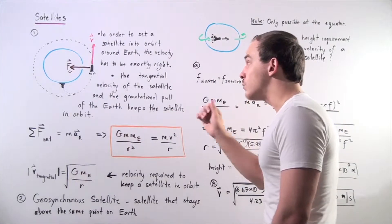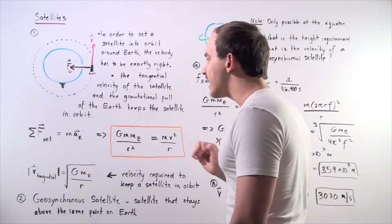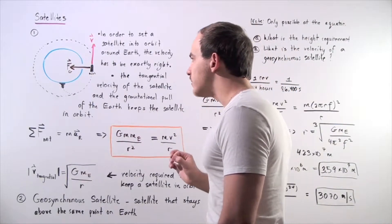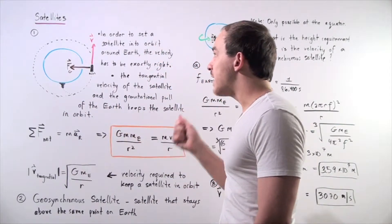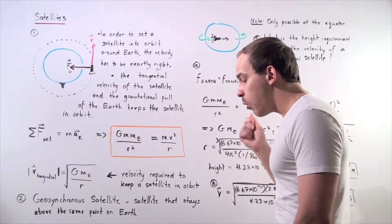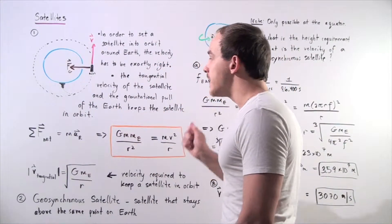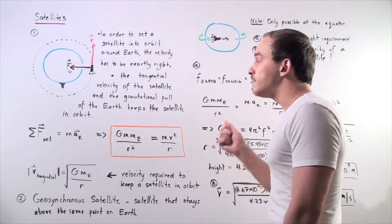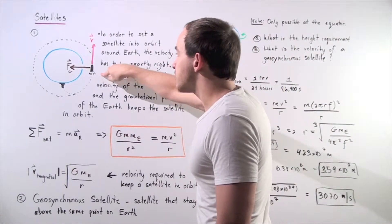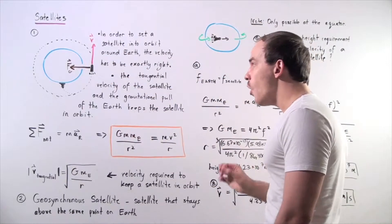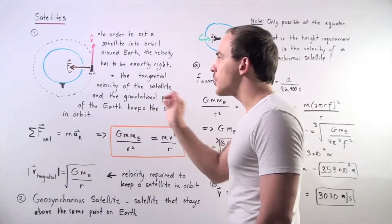If the velocity is too high it will escape; if it's too low it will fall back to the ground. Notice that our velocity vector always points tangent to our orbit, and the net force acting on the satellite always points toward the center of the Earth.